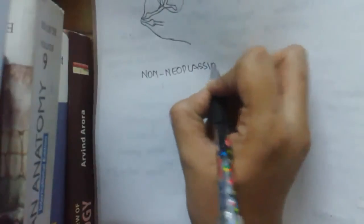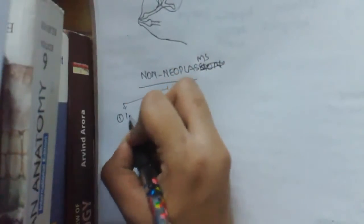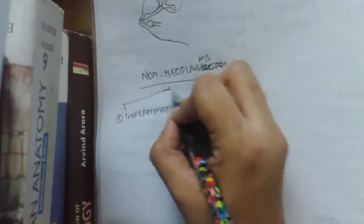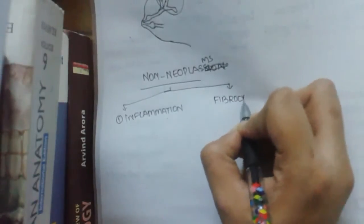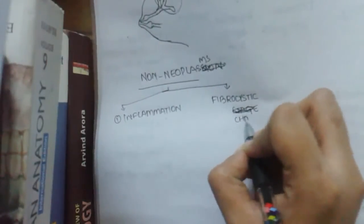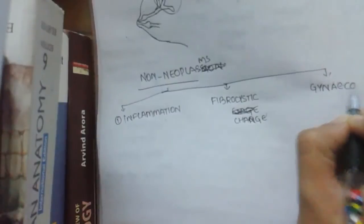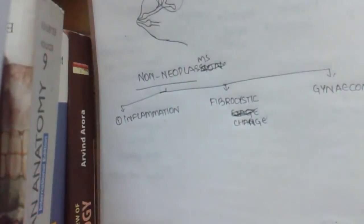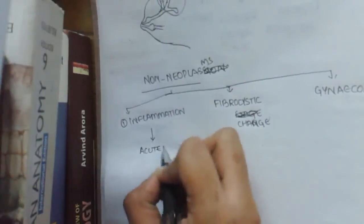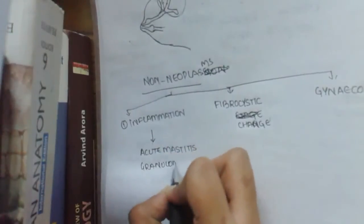The non-neoplastic lesions of the breast are subdivided into three types. One is inflammations, the other is fibrocystic change, and the third is gynecomastia. In the inflammations we deal with acute mastitis - mastitis is inflammation of breast - and granulomatous mastitis.